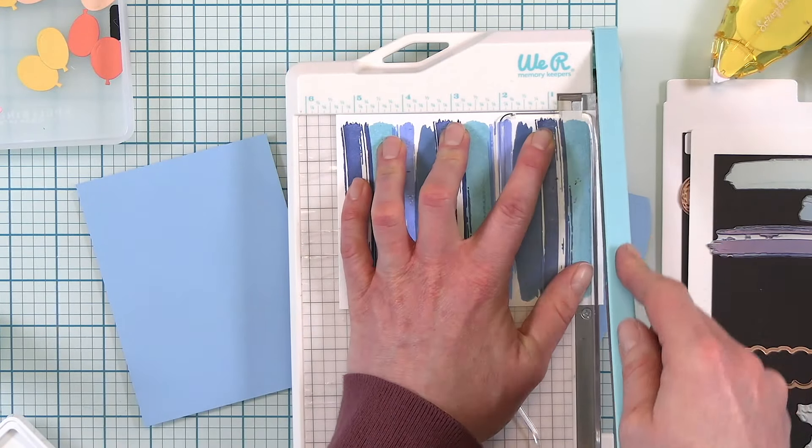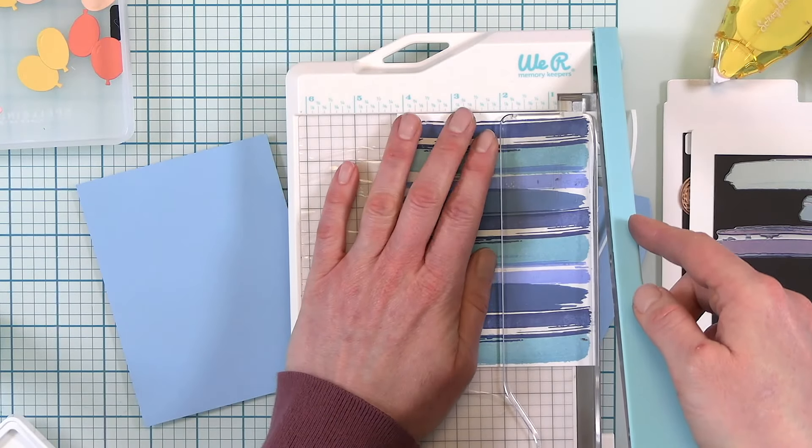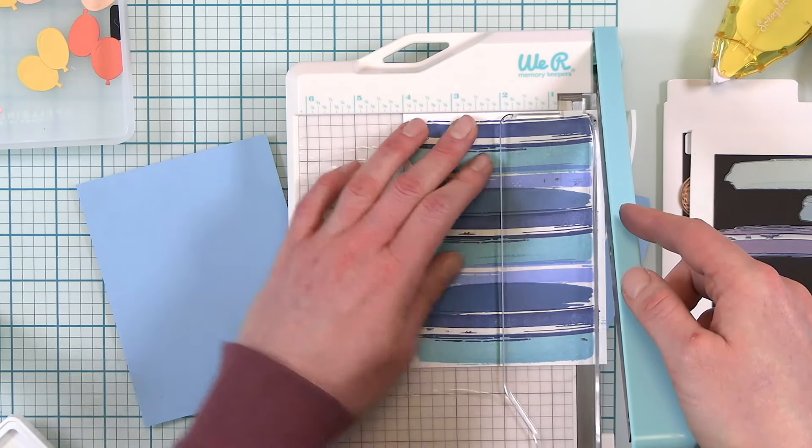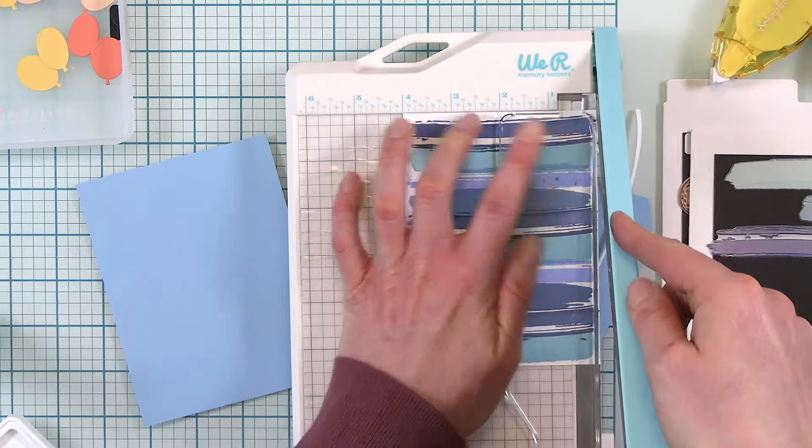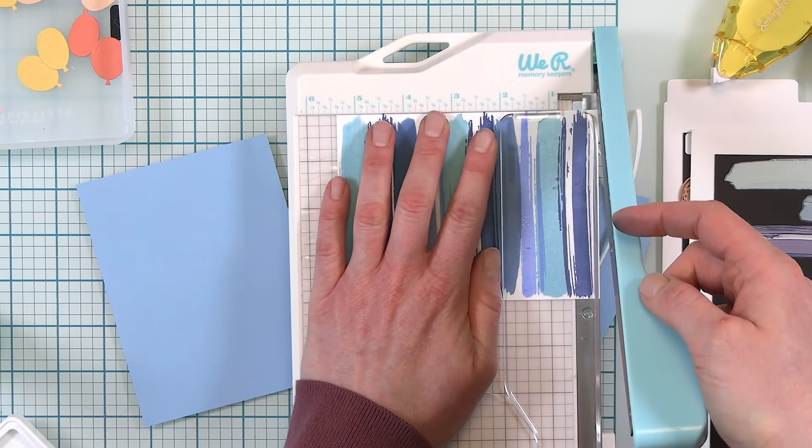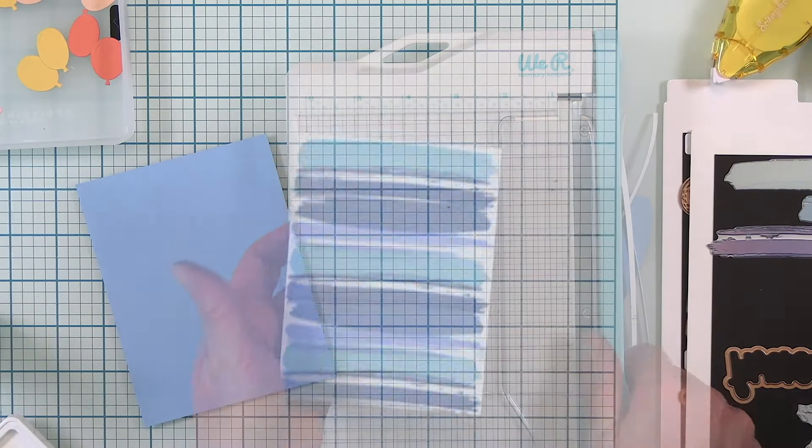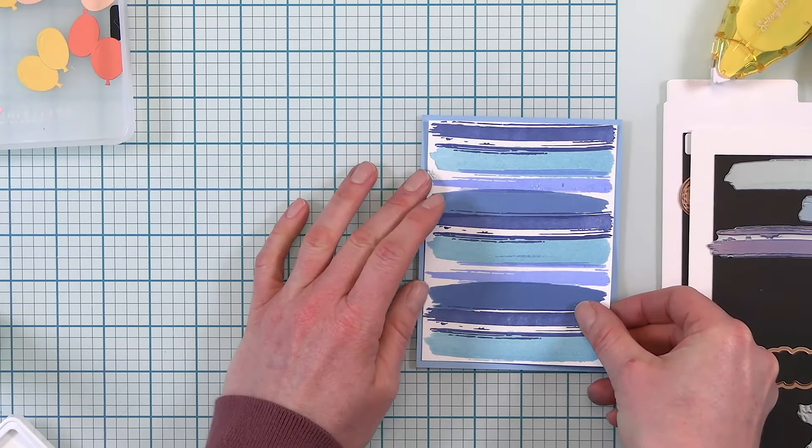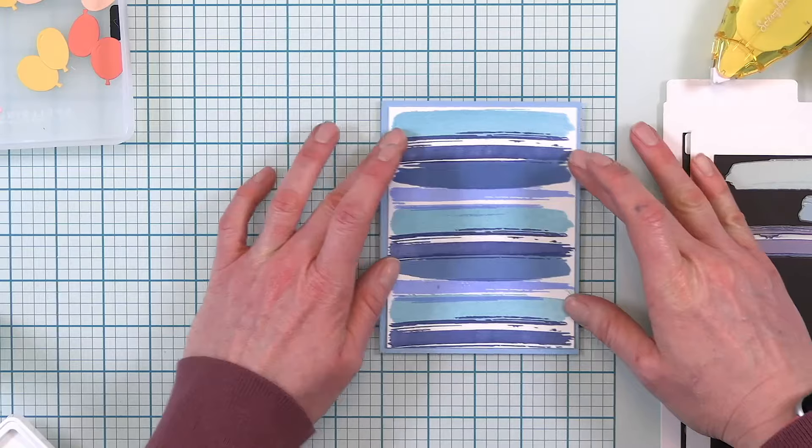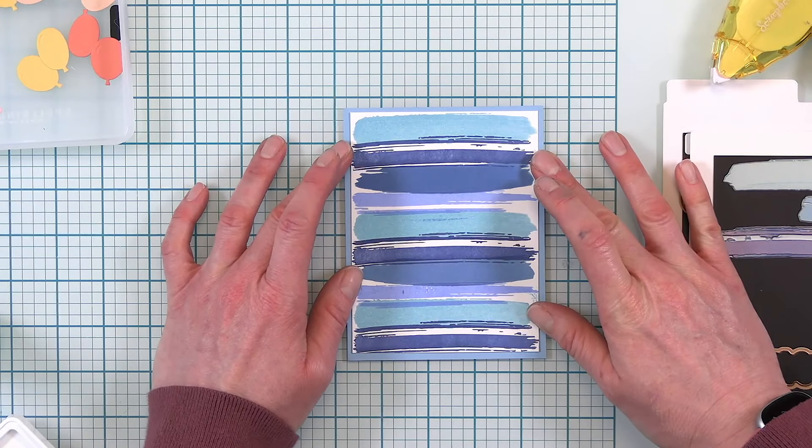Before I move on I'm going to mat this onto blue cardstock from Spellbinders. So I want to make sure that I have a nice little border. I'm only cutting off an eighth of an inch all the way around so that there is still a tiny bit of white showing.